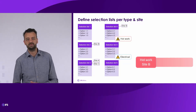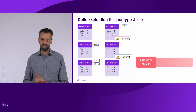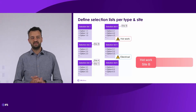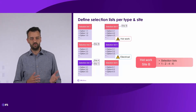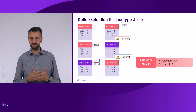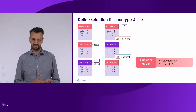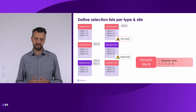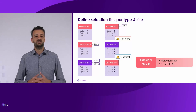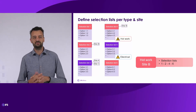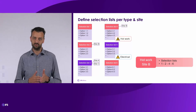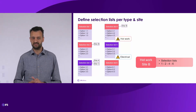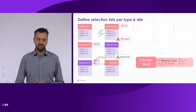The last example is the hot work permit for site B. Selection lists one and six again, because they are always applied. Selection list two because it's specific for site B, and selection list four because it's specific for site B and hot work. So only hot work permits for site B will get selection list four.